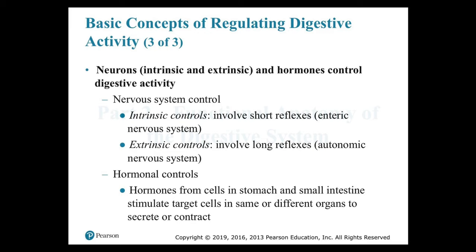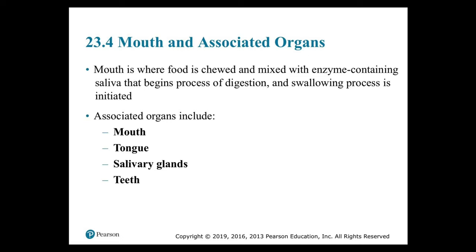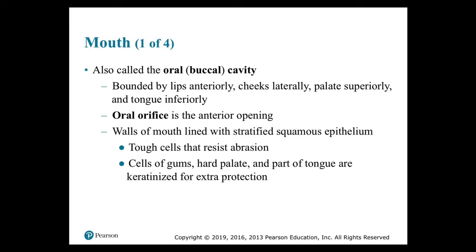Part 2: Functional Anatomy of the Digestive System — Section 23.4, Mouth and Associated Organs. Our explanation of the digestive tract follows the path of ingested materials from the mouth to the anus. The mouth is where food is chewed and mixed with enzyme-containing saliva, beginning the process of digestion, and the swallowing process is initiated. Associated organs include the mouth, tongue, salivary glands, and teeth. The mouth opens into the oral cavity or buccal cavity, bounded by lips anteriorly, cheeks laterally, palate superiorly, and tongue inferiorly.